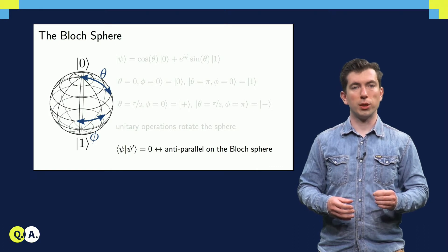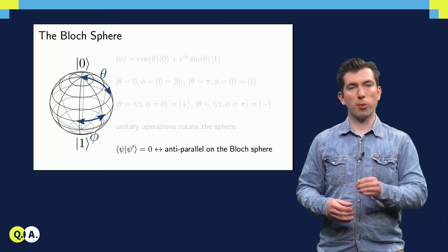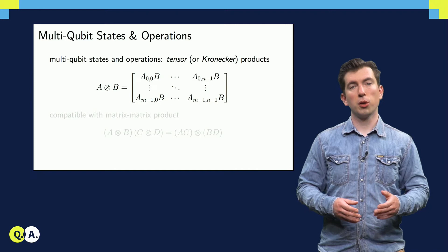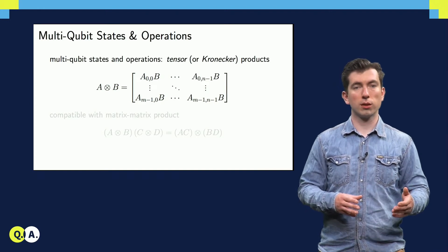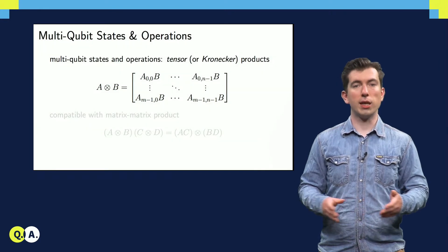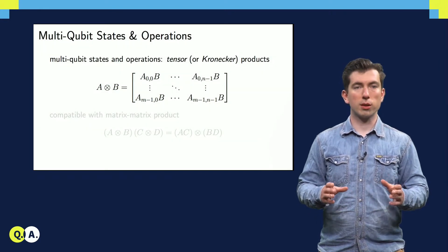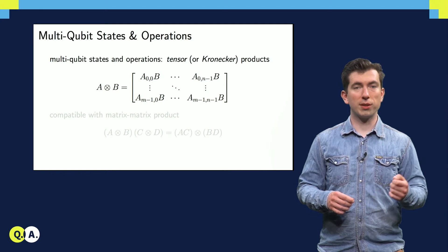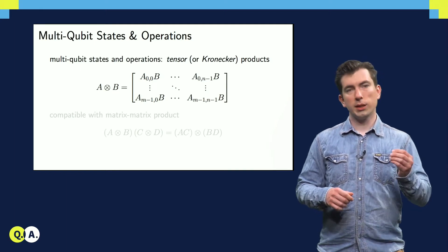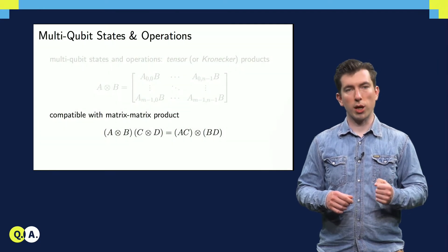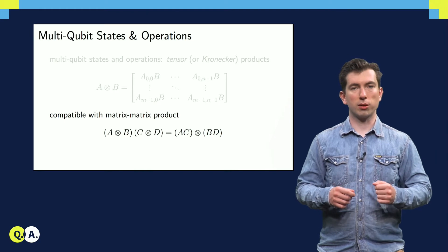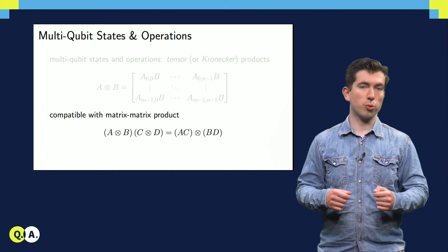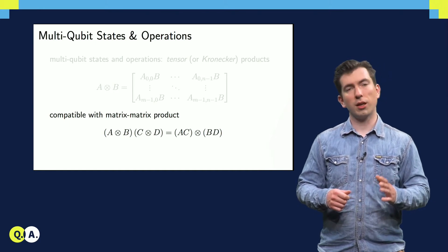But how do we describe multi-qubit states and operations? Specifically, how do we build them up from operations on smaller subsystems of a many-qubit state? To accomplish this, we use a different kind of matrix product, called the tensor product or Kronecker product. To take the tensor product of two matrices A and B, we write out a block matrix, where each block is equal to B times the appropriate element of A. The upper-left block is B times the upper-left element of A, and so on. The interesting thing about the tensor product is that it's compatible with the regular matrix product. That is to say that if I take the matrix product of two tensor products, I get the same matrix as if I took the matrix products first, then evaluated the tensor product. This is also easier to understand if we take a look at a few examples.